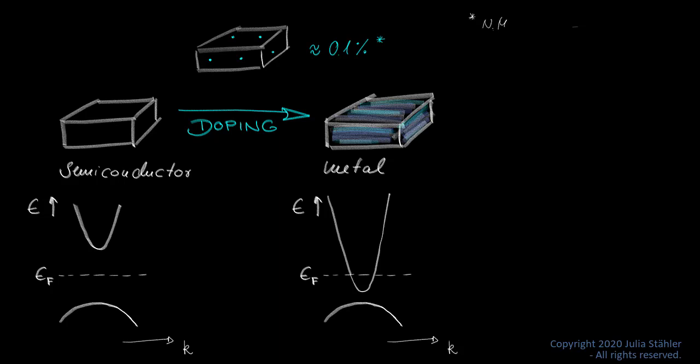The origin of this semiconductor to metal transition is the so-called Mott transition and goes back to electron-electron interaction in the material.